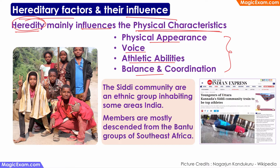Some characteristics might skip one generation and appear in the next. However, heredity is not the only factor influencing physical attributes. As we discussed, there are two factors: nature and nurture. Heredity is just nature. Environmental factors — such as the kind of food, shelter, family environment, education, and physical activity — also affect physical development and the physical characteristics of a person.